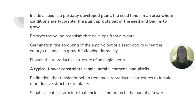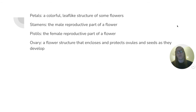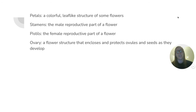A flower is the reproductive structure of an angiosperm. A typical flower contains sepals, petals, stamens, and pistils. Pollination is the transfer of pollen from male reproductive structures to female reproductive structures in plants. Sepals are leaf-like structures that enclose and protect the buds of a flower. Petals are colorful leaf-like structures of some flowers. Stamens are the male reproductive part of a flower. Pistils are the female reproductive part. An ovary is a flower structure that encloses and protects ovules and seeds as they develop.